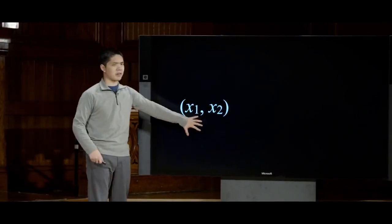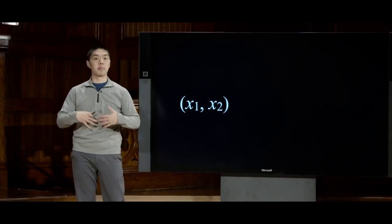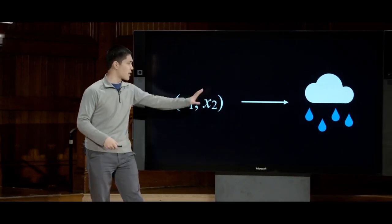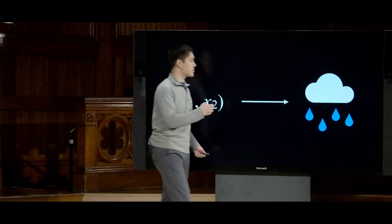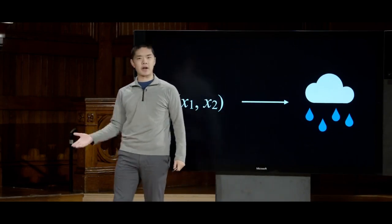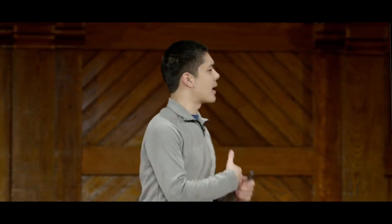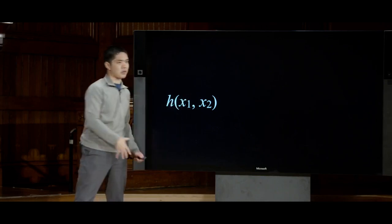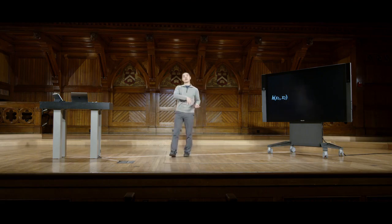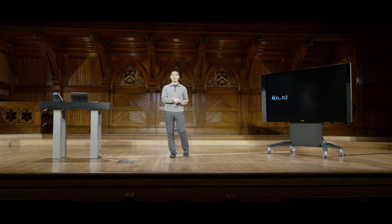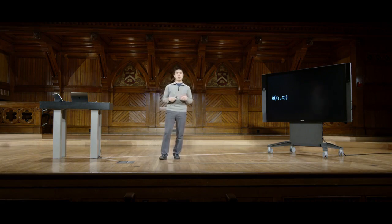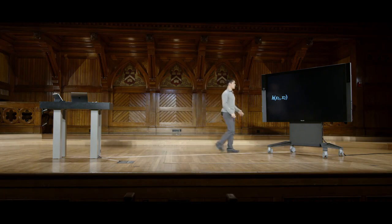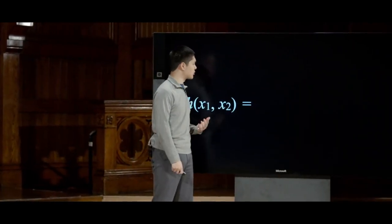This might take the form of something like: we have inputs x1 and x2, and given those inputs we want to perform a task like predicting whether it's going to rain. We'd like some way, given these inputs, to predict a Boolean classification — rain or not rain. We define a hypothesis function h that takes x1 and x2 as input. Last time we decided to use a linear combination of these input variables to determine what the output should be.